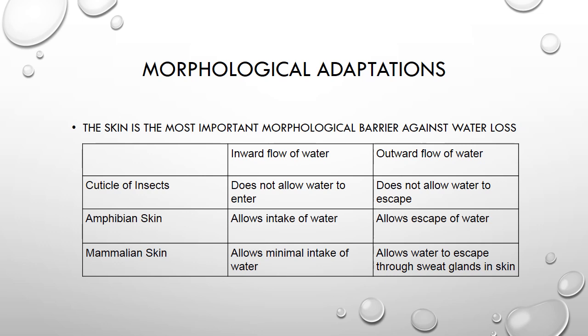On the other hand, terrestrial amphibians do not have skin that is perfectly adapted to terrestrial life, as water is able to flow bidirectionally through their skin. To face the threat of dehydration in a terrestrial environment, some species form a cocoon of many layers of dead skin in order to reduce water loss in dry seasons.